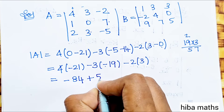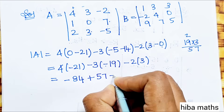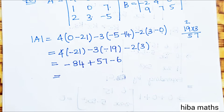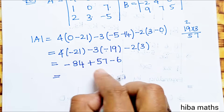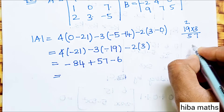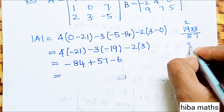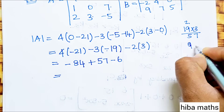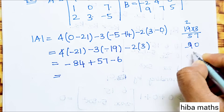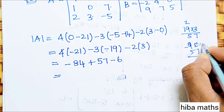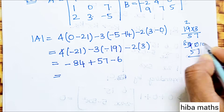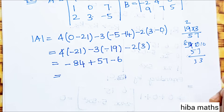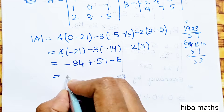Computing: −84 + 57 − 6 = −33. So the modulus (determinant) of A = −33.